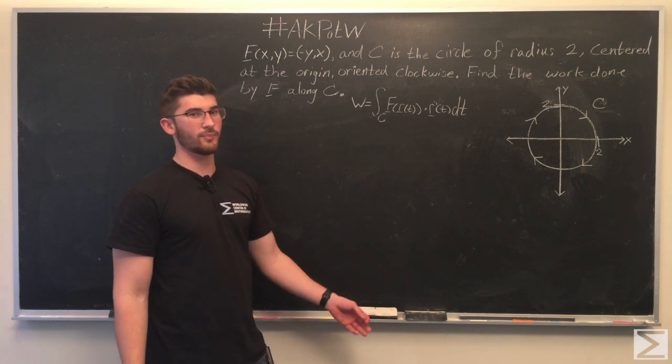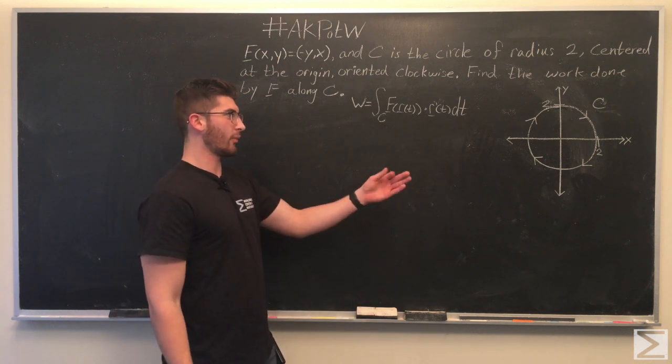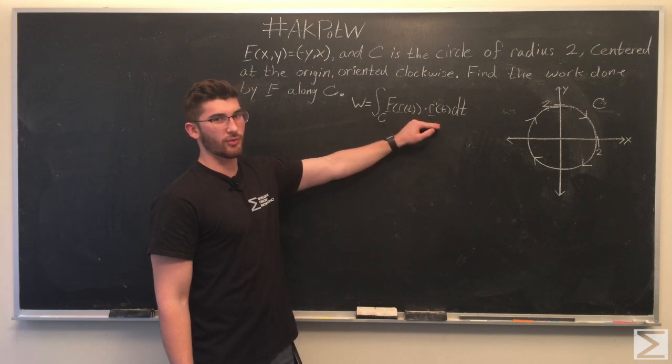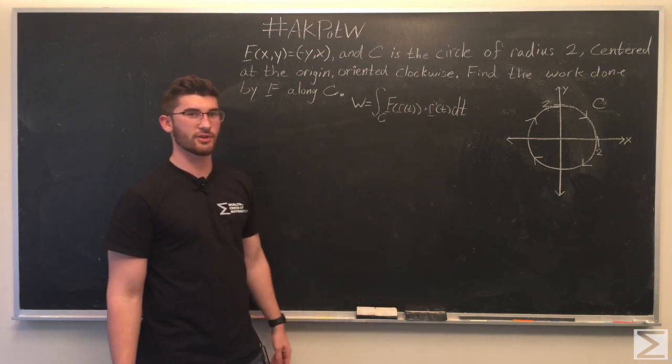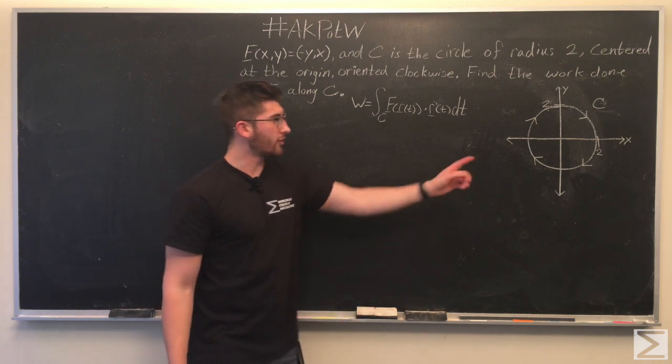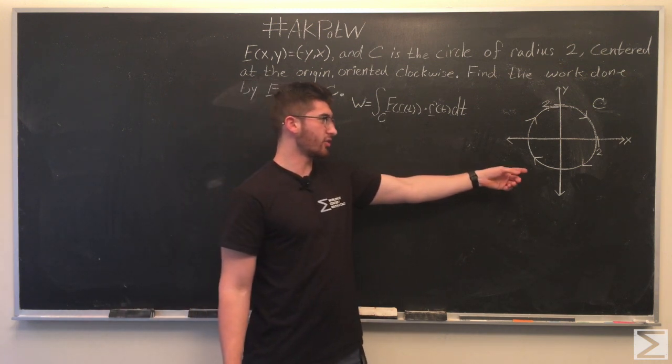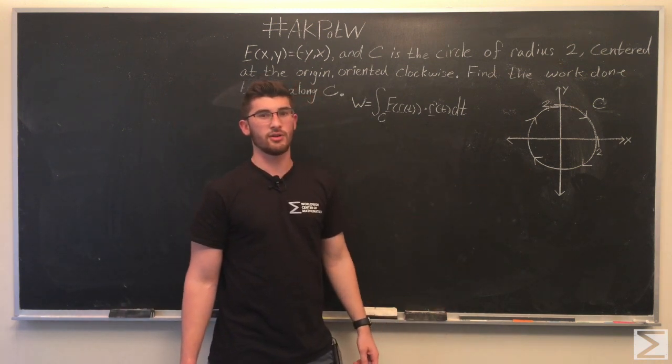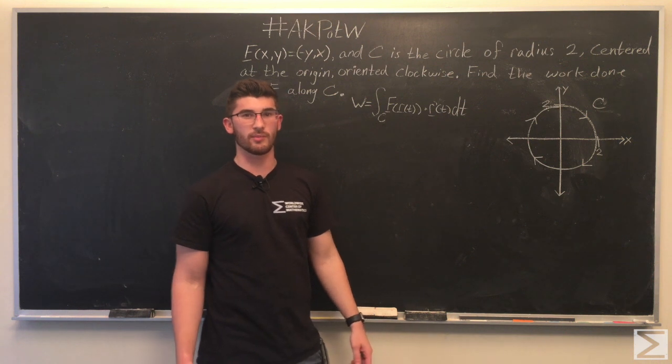So the first thing we have to do is parameterize our curve, and then we're going to step by step go through and find each of these components before plugging them into the integral. We've got our curve is a circle of radius 2, so our parameterization is going to be pretty obvious.